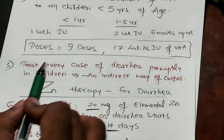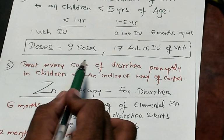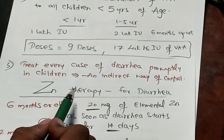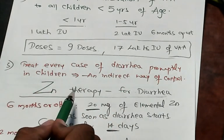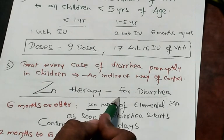The third preventive measure which you should not forget. Treat every case of diarrhea promptly in children. This is an indirect way of preventing vitamin A deficiency. Zinc therapy should be given for diarrhea.